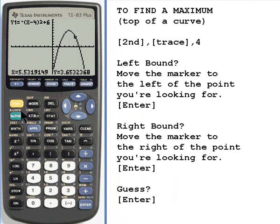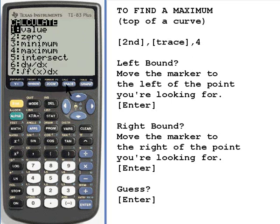So what I'm going to do is I'm going to press 2nd and then trace, and then maximum is number 4. I can either press the number 4, or I can use my cursor buttons to move down to the 4 and then press enter.